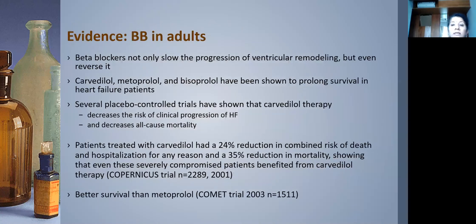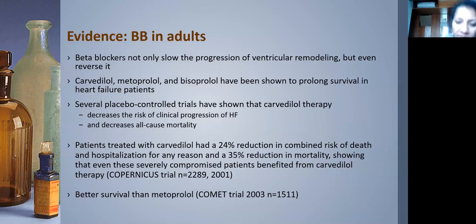In adults, multiple studies have shown beta blockers not only slow progression of ventricular remodeling but can even reverse it. Key trials with carvedilol, metoprolol, and bisoprolol demonstrated decreased risk of clinical progression and mortality. The COPERNICUS trial showed a 24% reduction in risk of death and hospitalization and a 35% reduction in mortality with carvedilol. The COMET trial showed benefit with metoprolol. These findings led to the recommendation of beta blocker therapy for all adults with heart failure.